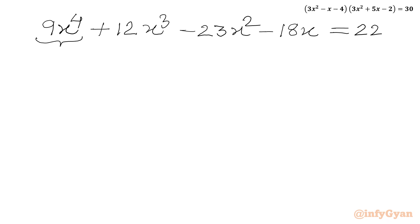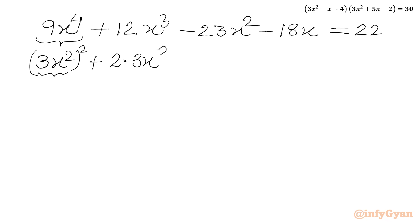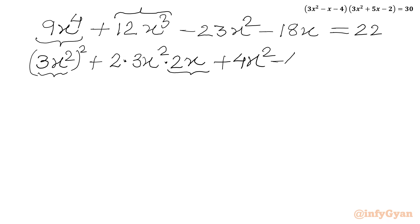We can see 9x⁴ can be written as (3x²)². Then 12x³ can be written as 2 times (3x²) times (2x), which gives 12x³. So I add and subtract (2x)² = 4x² to complete the square. So the expression becomes (3x² + 2x)² minus 4x² minus 23x² minus 18x equal to 22.